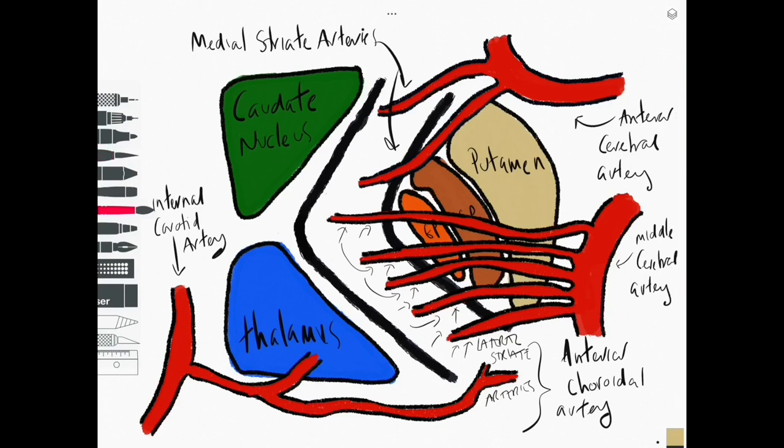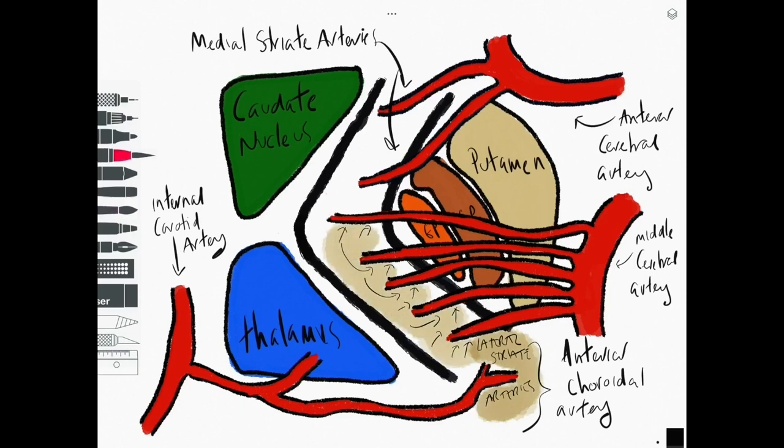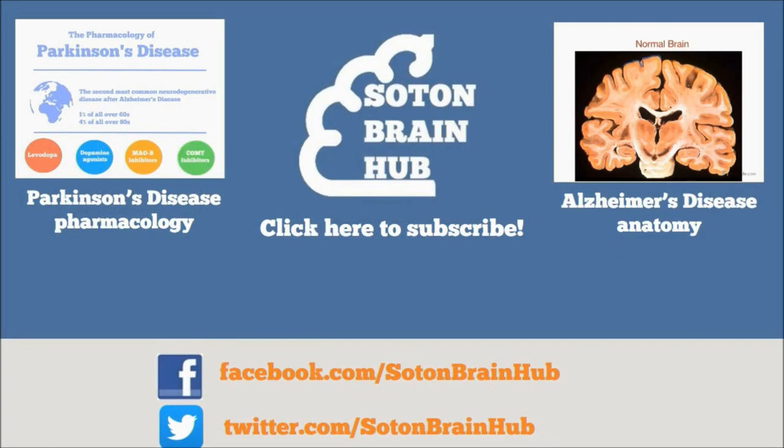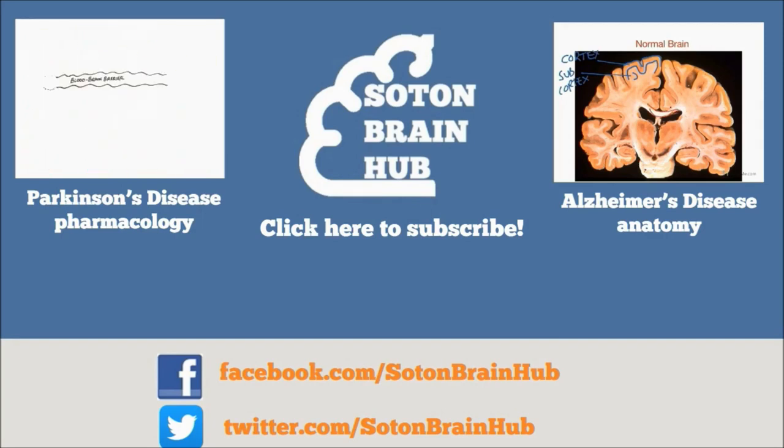So the lateral striate branches coming from the middle cerebral artery are emphasized here as being the most important branches. Subscribe to SoutenBrainHub for more videos to help explain the mysteries of the brain.